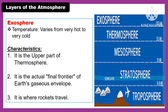Another layer of the atmosphere is the exosphere. The temperature in the exosphere varies from very hot to very cold. Characteristics of the exosphere: it is the upper part of the thermosphere and it is the actual final frontier of the Earth's gaseous atmosphere.